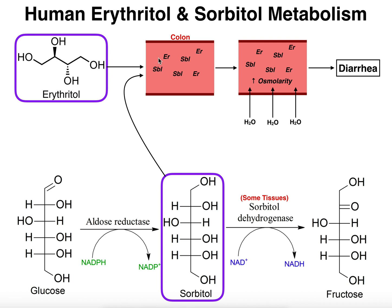I've abbreviated erythritol as ER and sorbitol as SBL — not a standard abbreviation, but it'll work for this purpose. Inside the lumen of your colon, erythritol is viewed as a solute. It's going to be present in a large amount because none of it is metabolized, so the solute concentration inside the lumen of the colon increases. From basic physics or physiology, a large solute concentration inside the lumen of a tube increases what we call the osmolarity inside that lumen.